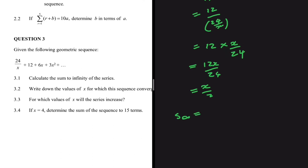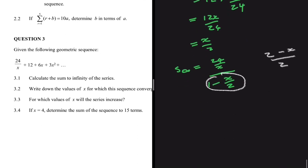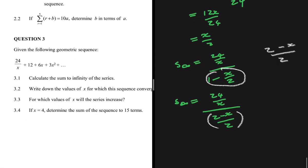So the sum to infinity equals a, which is 24 divided by x, divided by (1 minus r), which is x divided by 2. The denominator (1 minus x/2) is the same as (2 minus x) divided by 2. So let's write it that way: S∞ = (24/x) divided by ((2 minus x)/2).